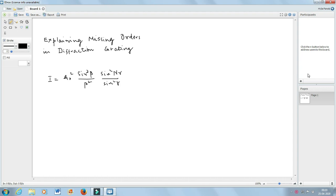What is missing order? Missing order means that at a position where you expect a principal maxima will be absent in the grating spectrum.